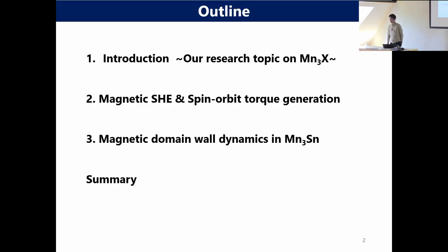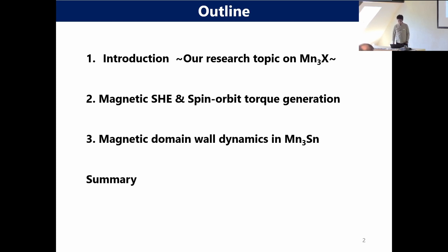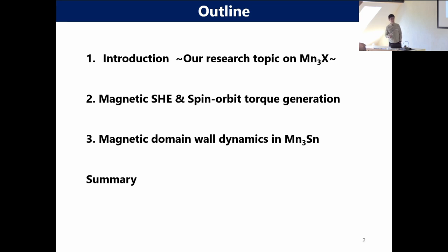So this is the outline of my talk. At first, I will introduce our research topic on Mn3Sn. Then after that, today I will show two topics. One is the magnetic spin Hall effect — this is a new type of spin Hall effect in this non-colinear antiferromagnet — and we measure the spin-orbit torque from this material. Then I will show a brief result of the magnetic domain wall dynamics in this material. And I will summarize the talk.